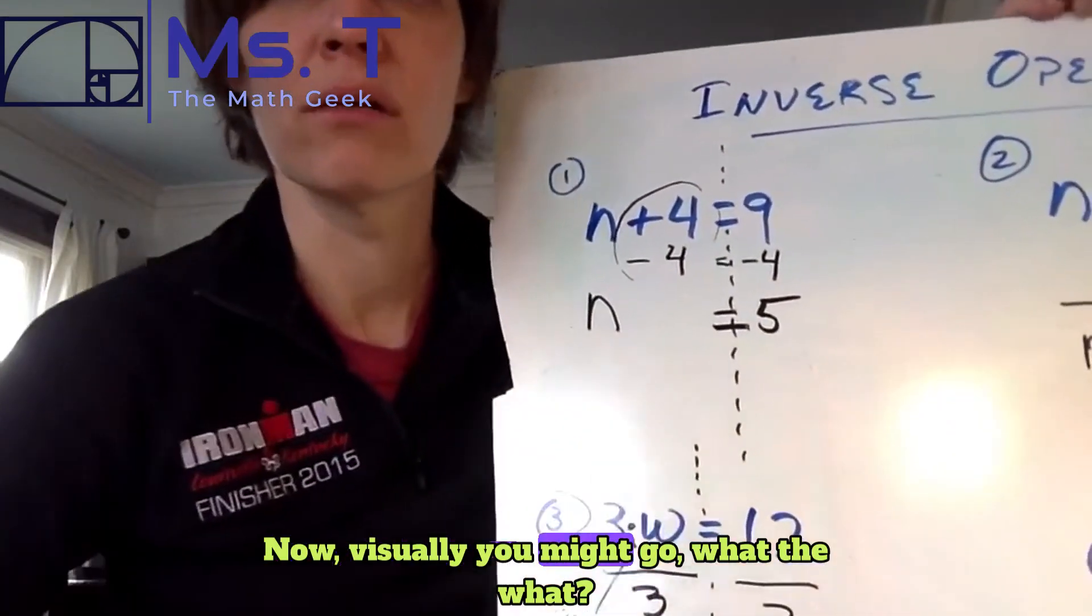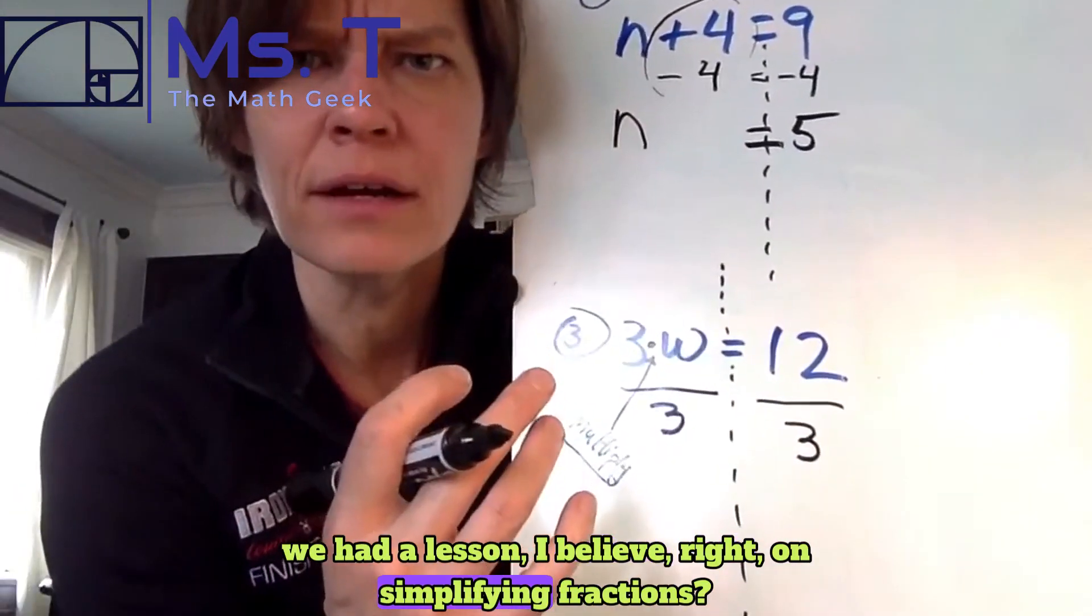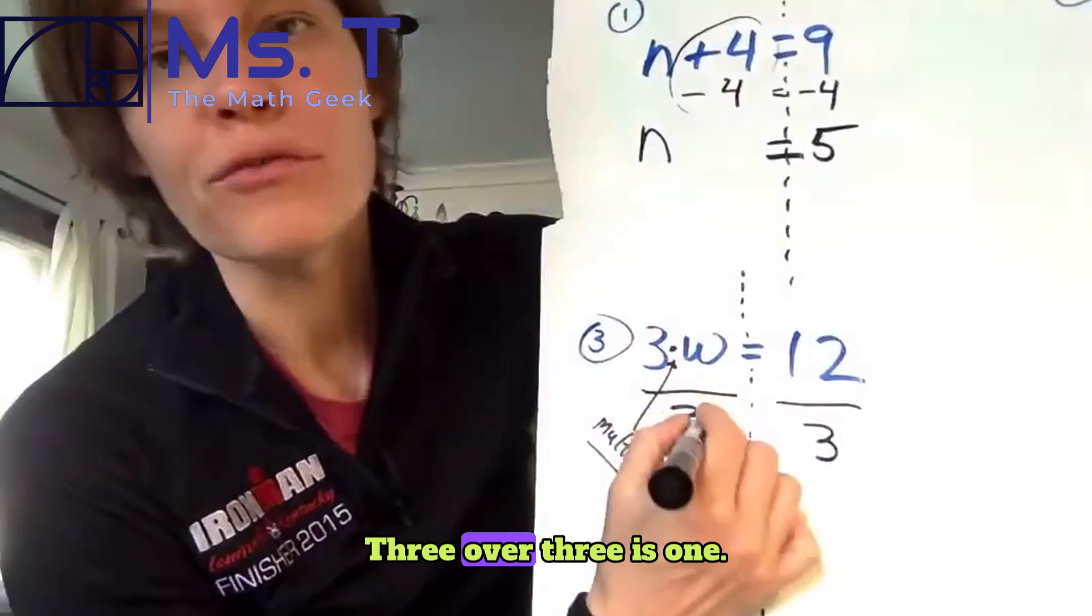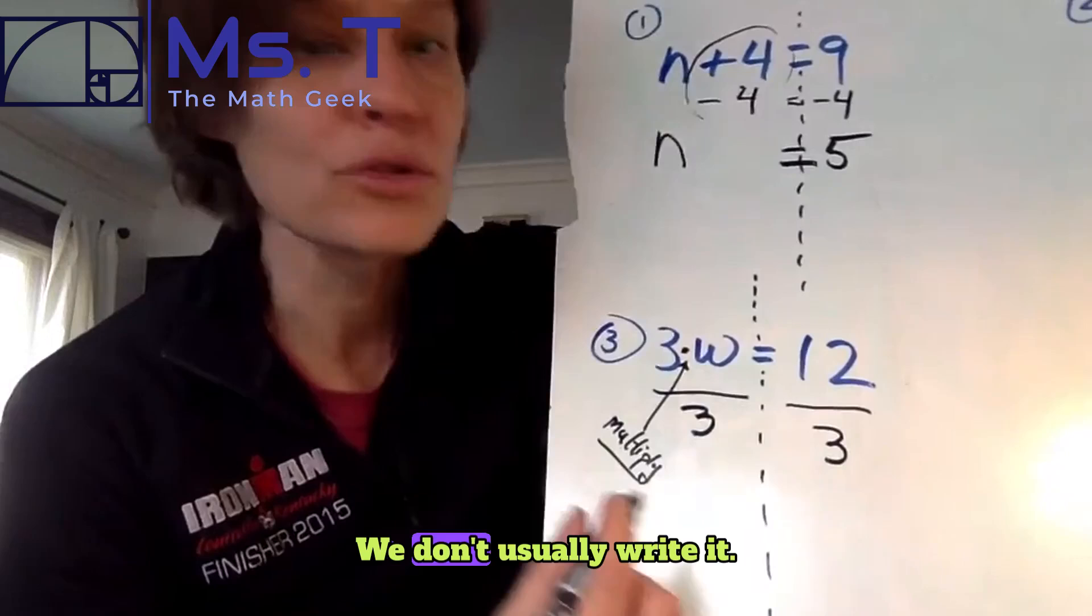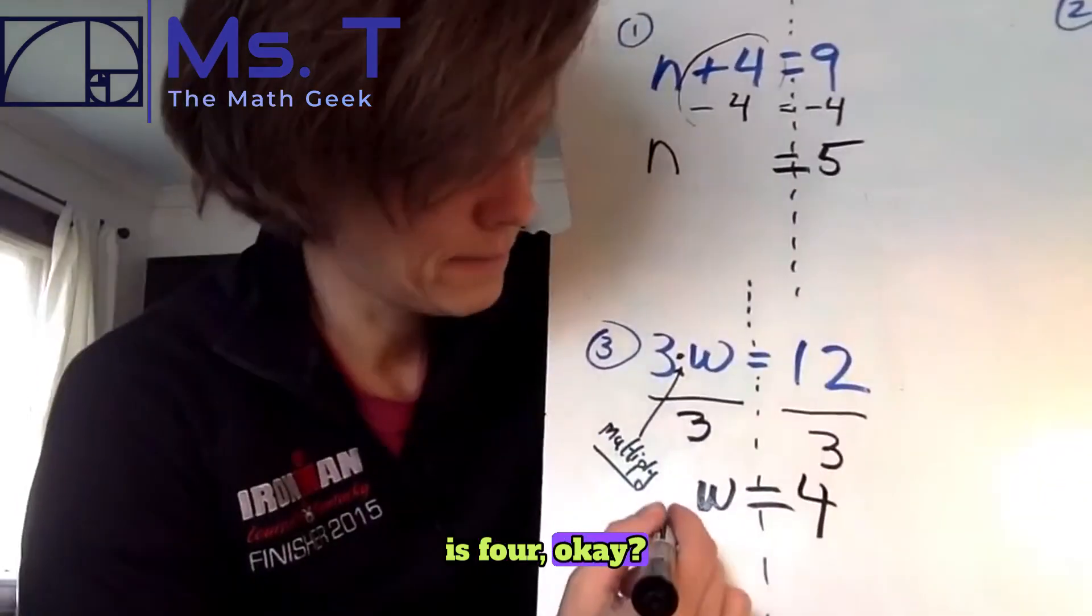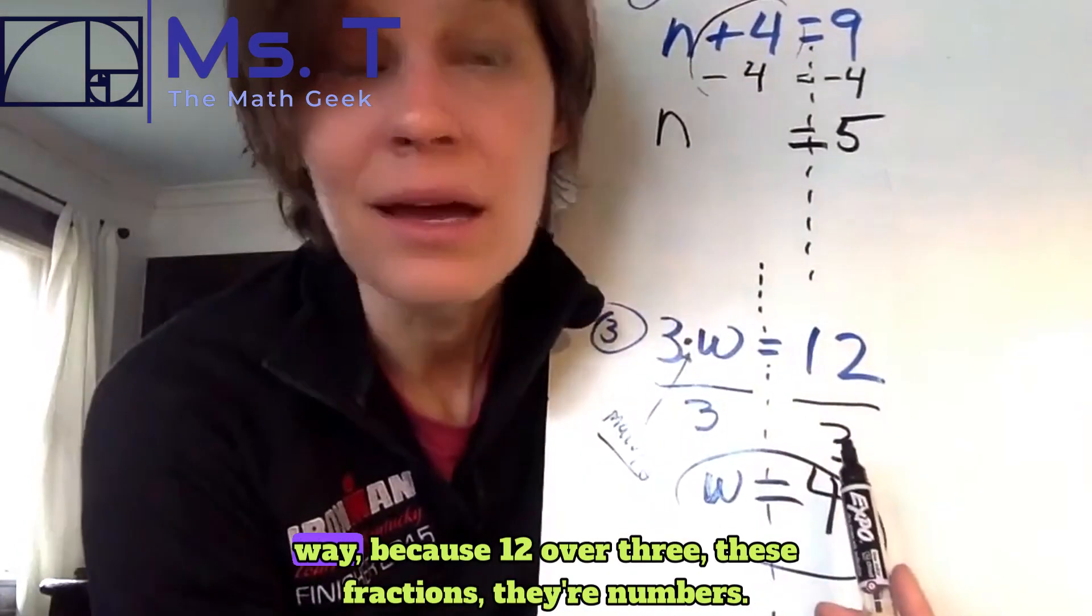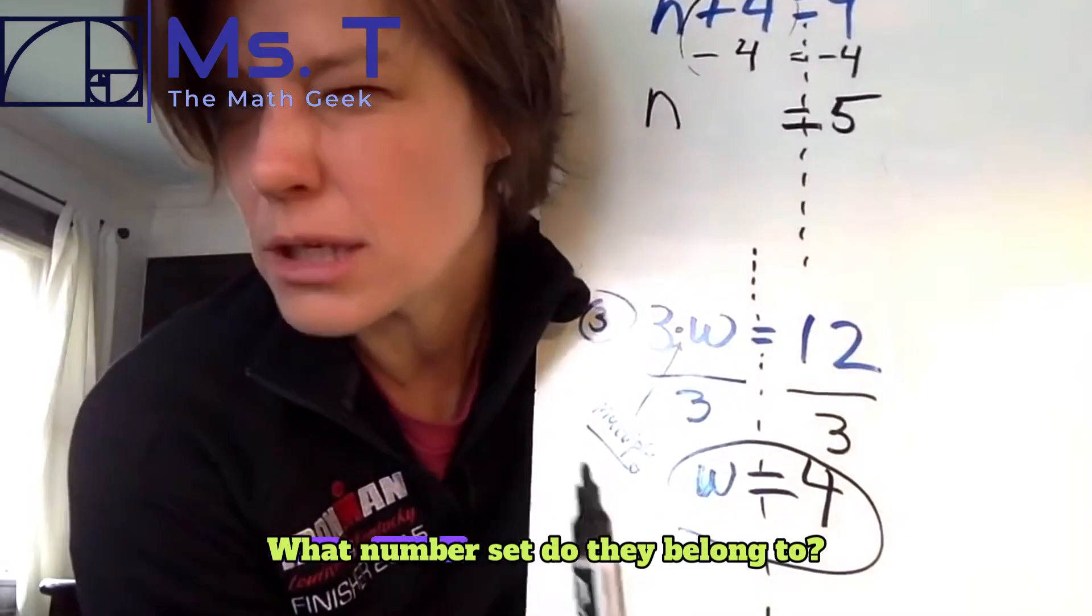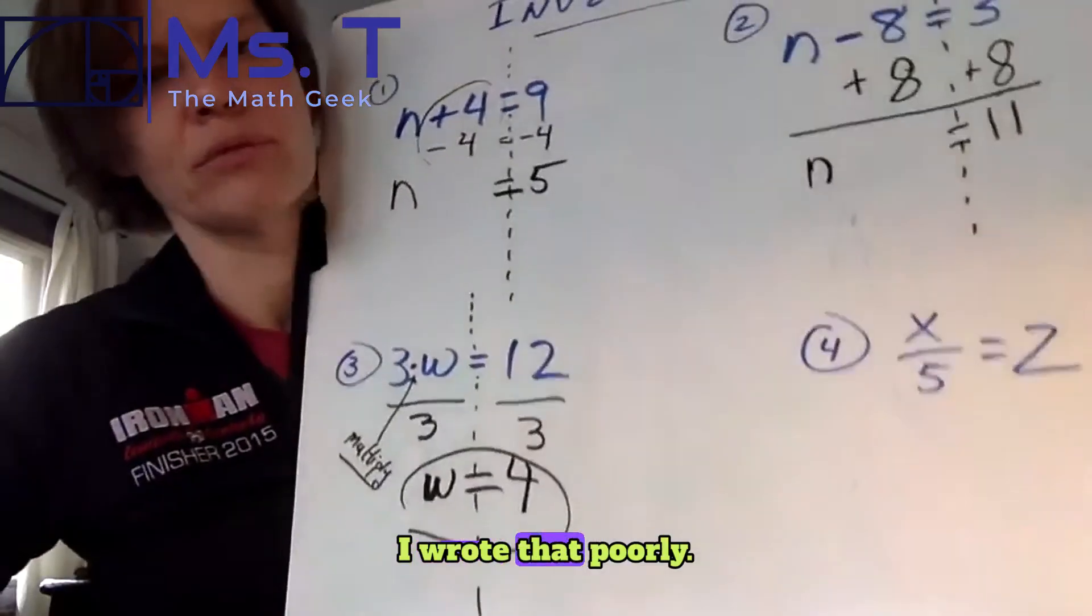Now visually you might go, what the what? Because you can take these both simply. Remember we had a lesson, I believe, on simplifying fractions. I hope I uploaded that. Maybe I didn't. I'll have to upload it later. So many things to keep track of. Three over three is one. That is the identity under multiplication. We don't usually write it. We just end up with our W over here. 12 divided by three is four. Now, if for some reason 12 didn't divide into three evenly, you can leave it that way. Because 12 over three, these fractions, they're numbers. They're not integers, right? What number set do they belong to? You remember? They're rational. They're ratios. W is four. I wrote that poorly.